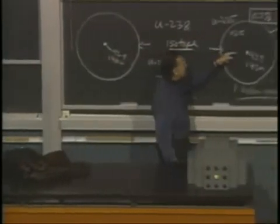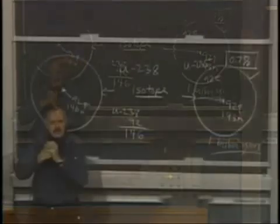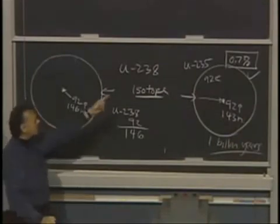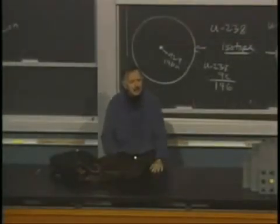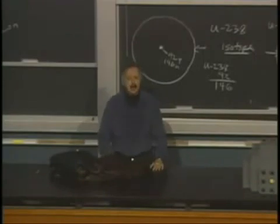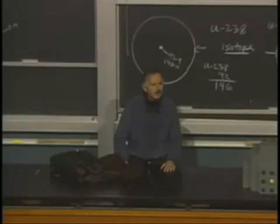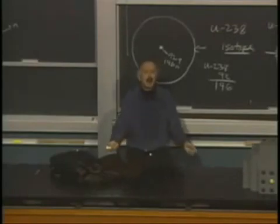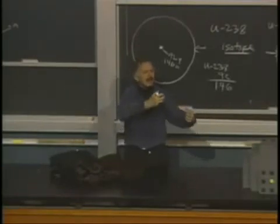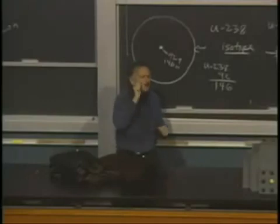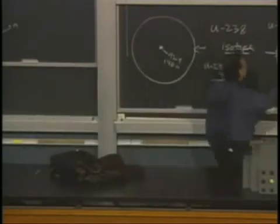If that neutron comes to uranium and hits the nucleus, it could stick. With a certain probability it will stick, and if it does, we no longer have uranium-235 — we have uranium-236. Uranium-236 becomes highly radioactive; its half-life is probably less than a billionth of a second. It doesn't just give off an alpha particle — it explodes with something called fission. The nucleus breaks into two pieces and they go flying apart, repelling each other. These two pieces are called fission fragments.